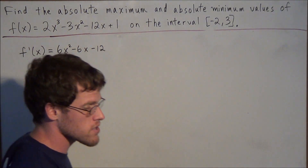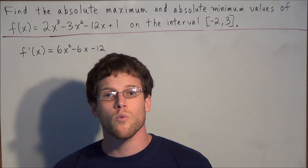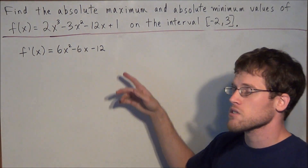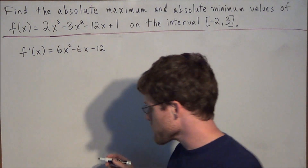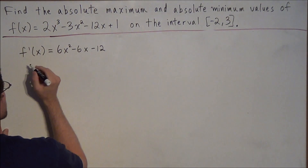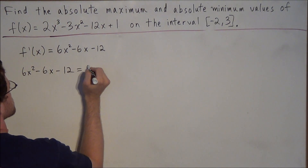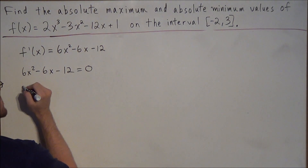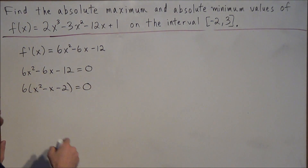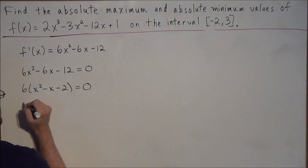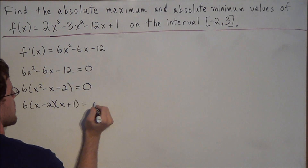Now that we have our f′(x), the critical values of a function are where the first derivative equals 0 or where it's undefined. Since we have a polynomial, it's defined for all real numbers, so we're looking for where the derivative equals 0. We set 6x² − 6x − 12 = 0. We can factor out a 6, leaving x² − x − 2 = 0, which factors into (x − 2)(x + 1) = 0.